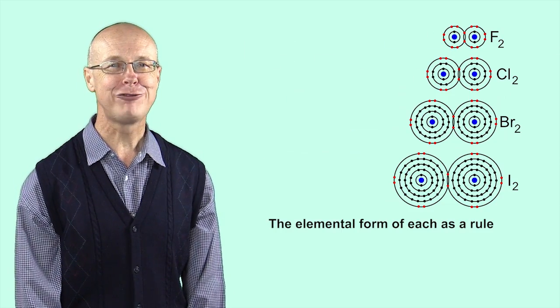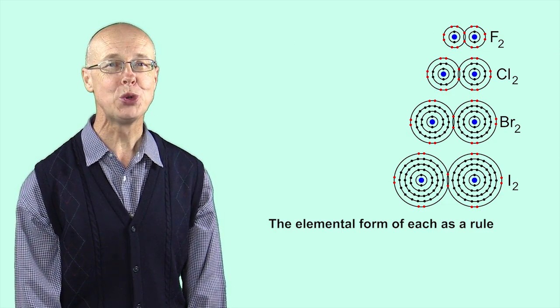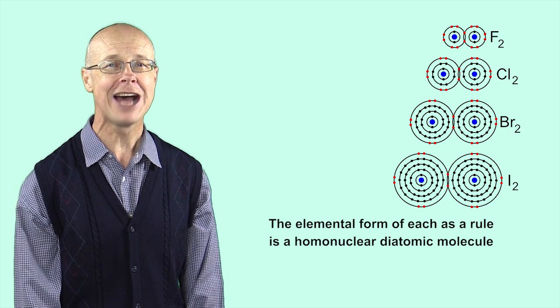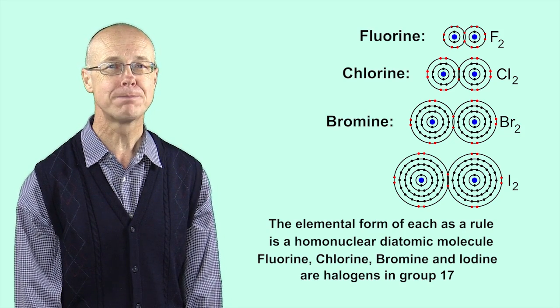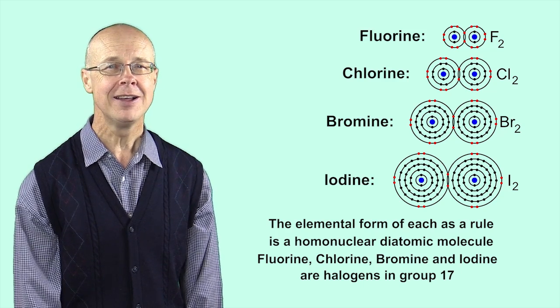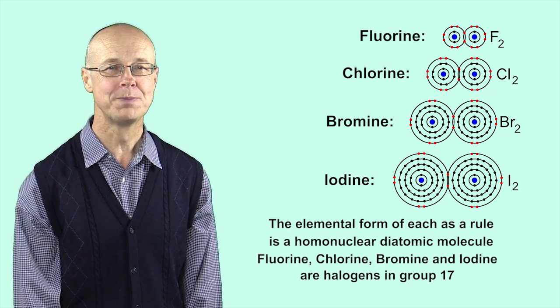The elemental form of each as a rule is a homonuclear diatomic molecule. Fluorine, Chlorine, Bromine and Iodine are halogens in group 17.